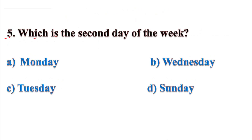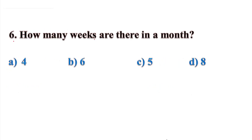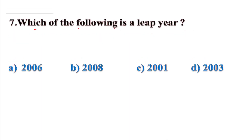Question 5: Which is the second day of the week? Options: A-Monday, B-Wednesday, C-Tuesday, D-Sunday. Correct answer: Option A, Monday. Question 6: How many weeks are there in a month? Options: A-4, B-6, C-5, D-8. Correct answer: Option A, 4. Question 7: Which of the following is a leap year? Options: A-2006, B-2008, C-2001, D-2003. Since 2008 ends in 8, which is divisible by 4 (4×2=8), the correct answer is Option B, 2008.